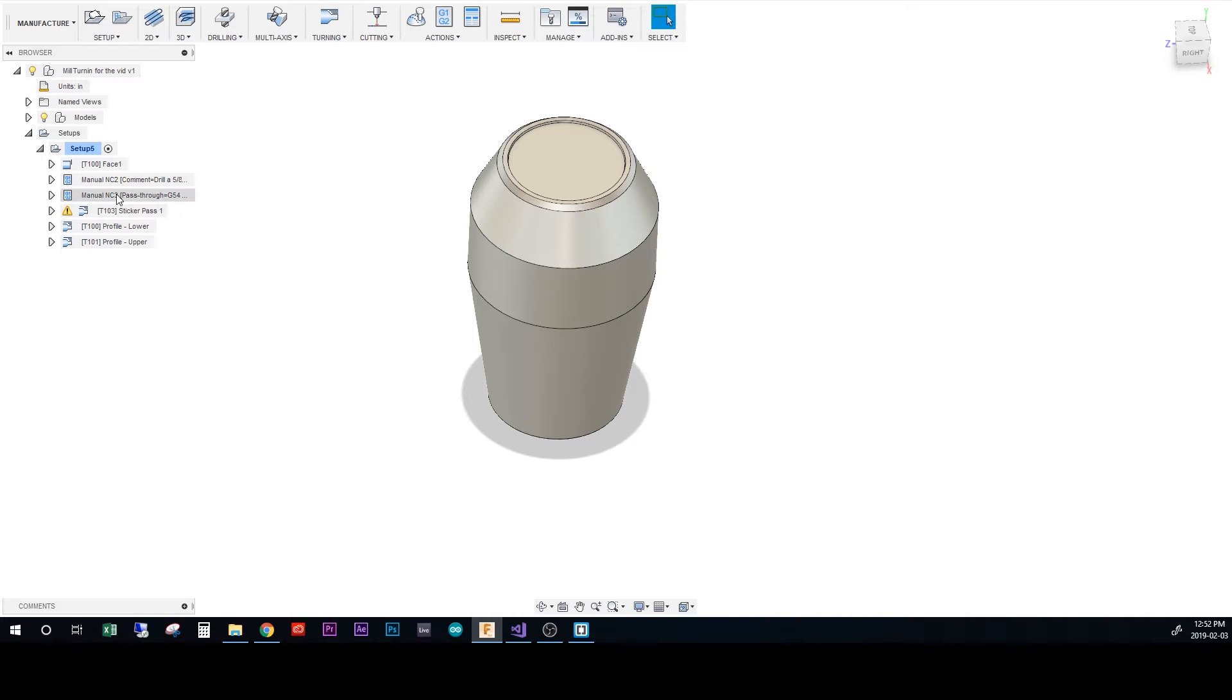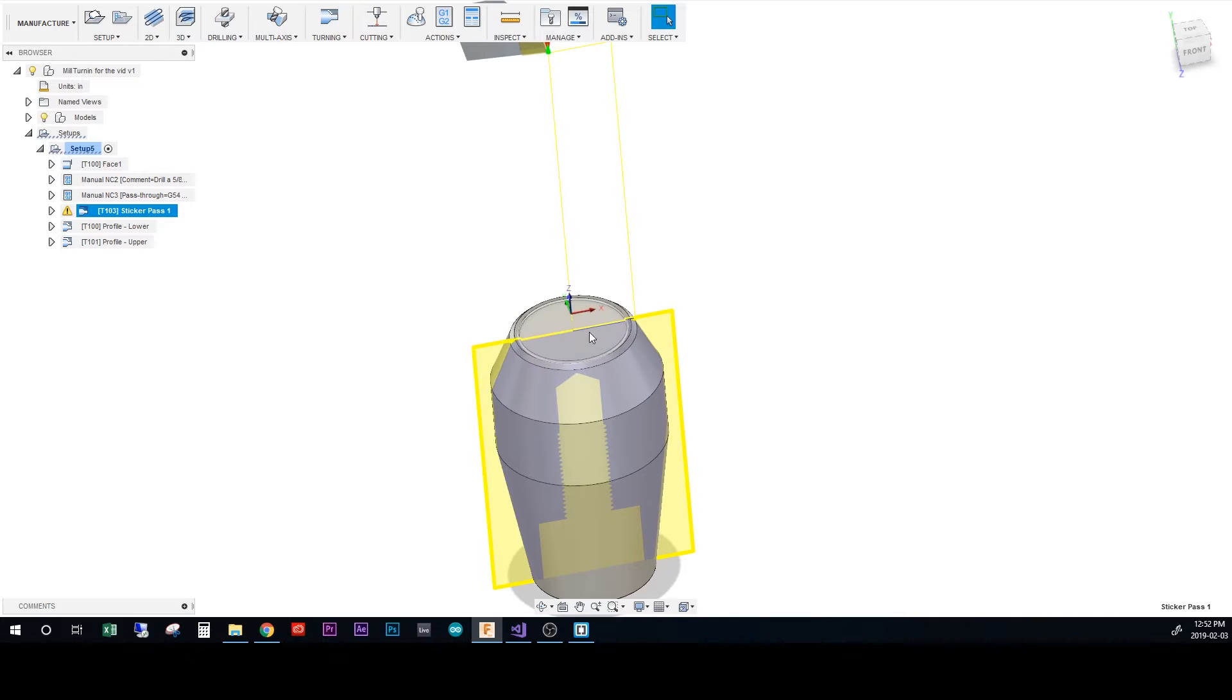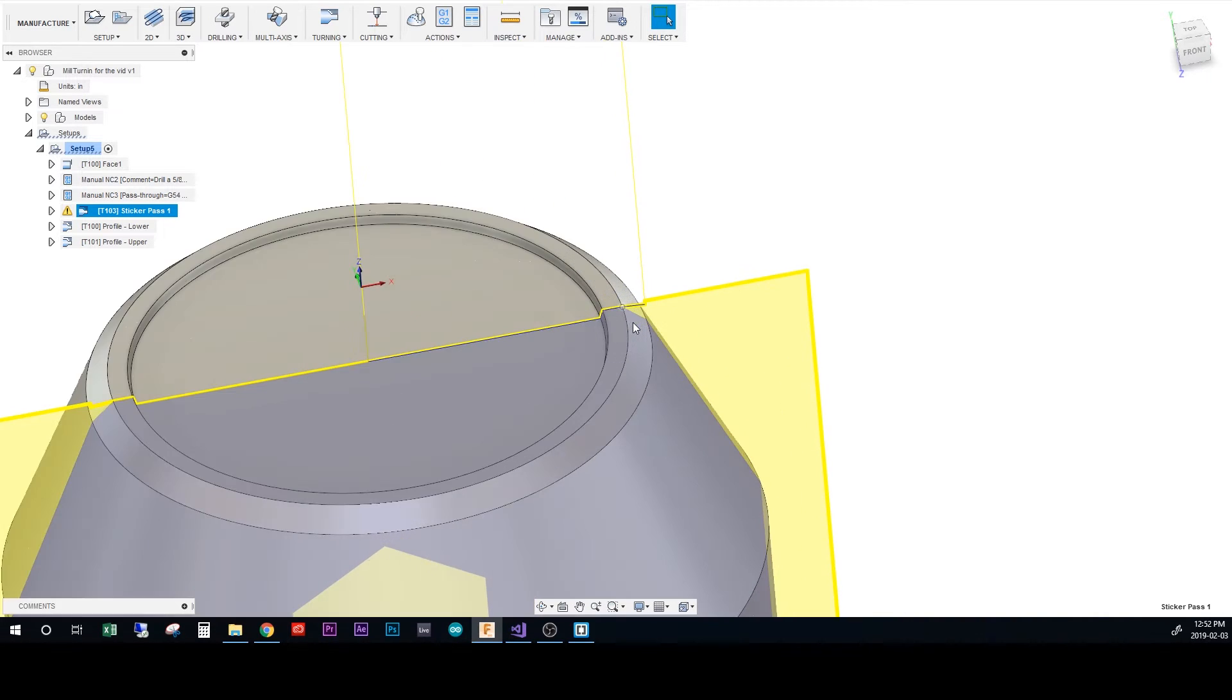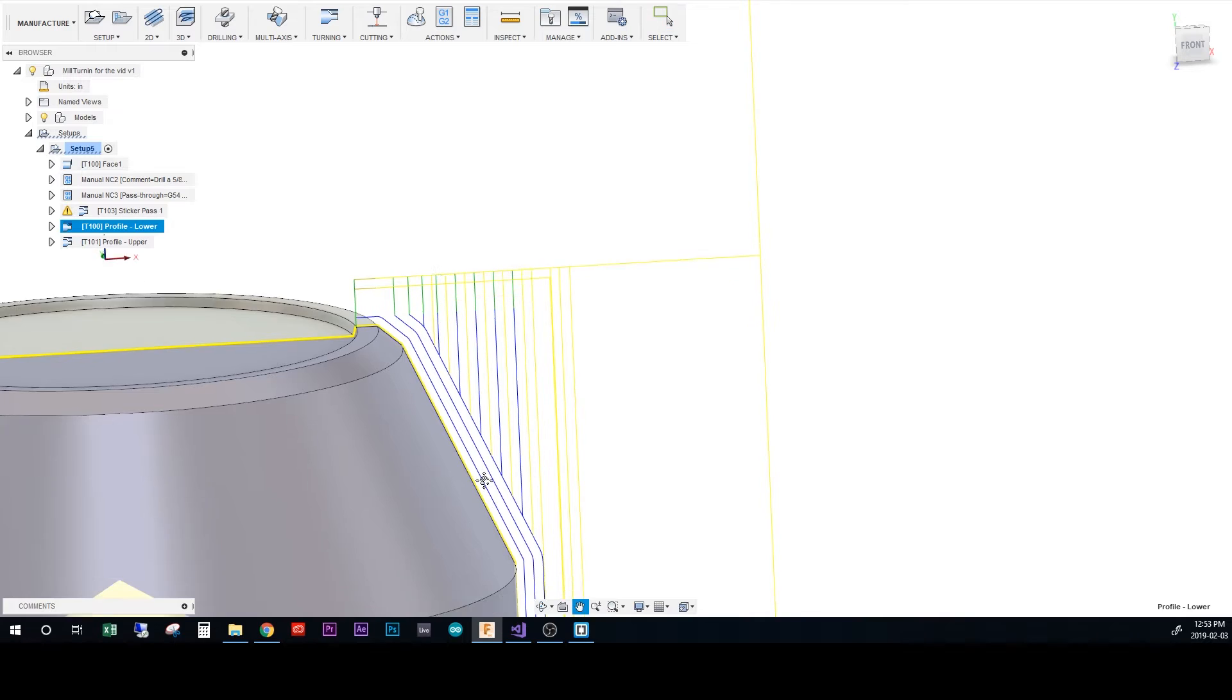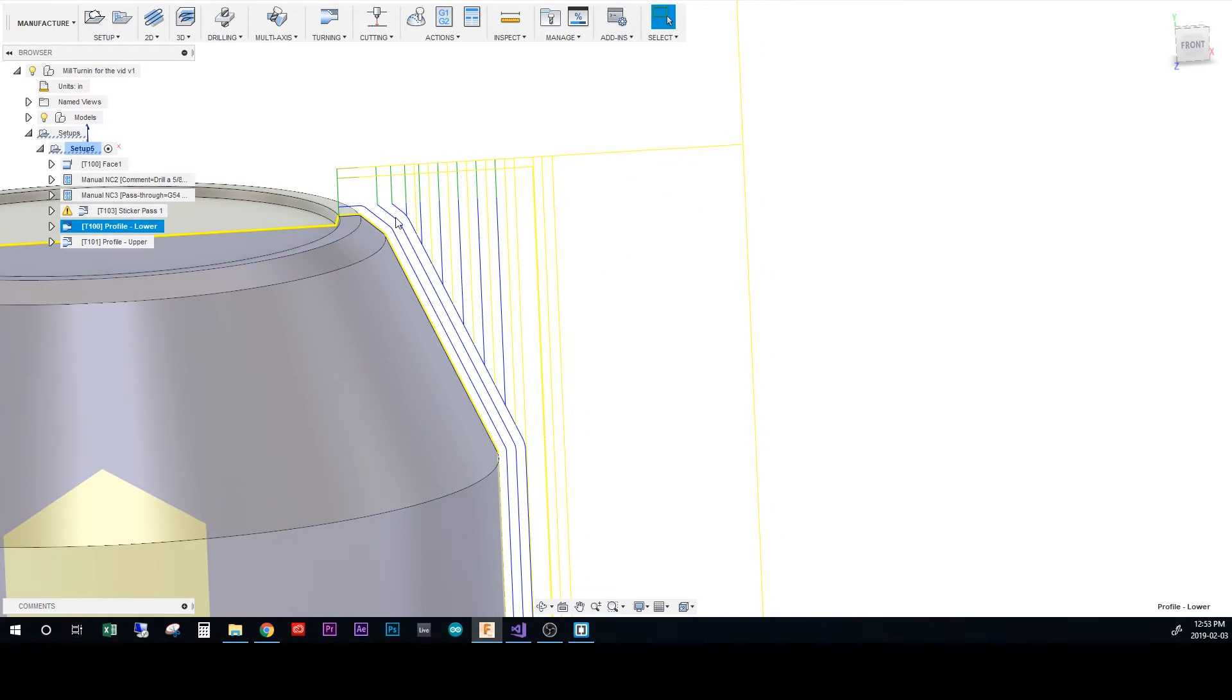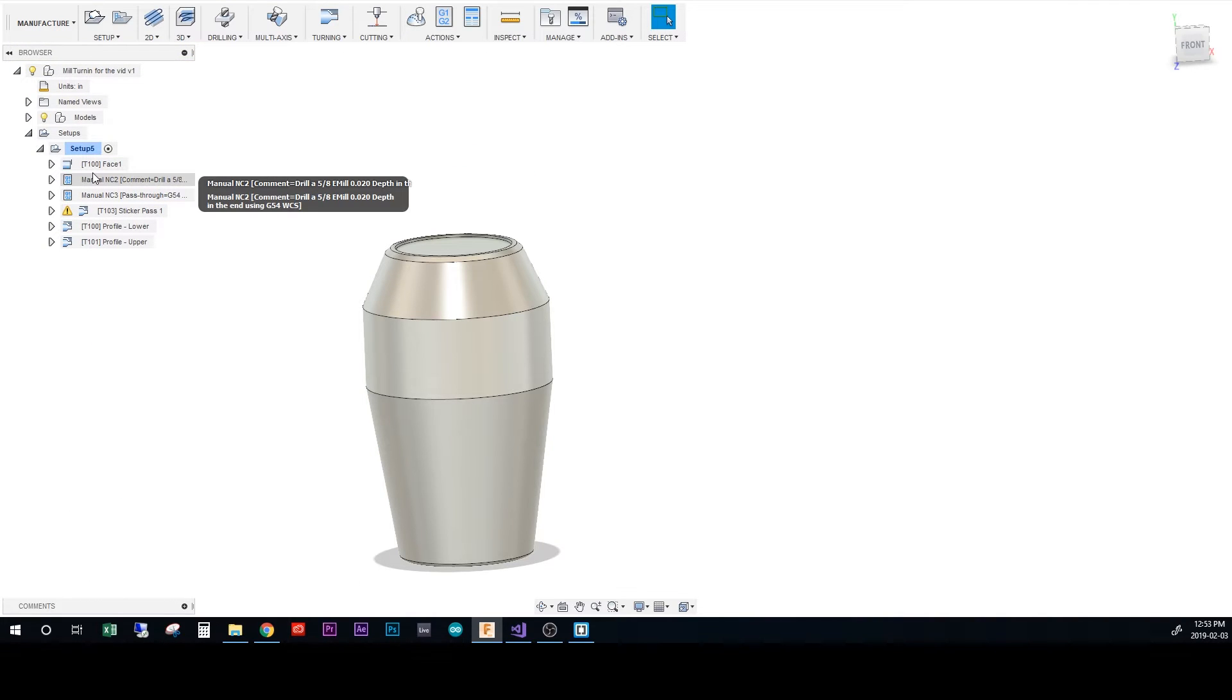I do the spot drill, if you will, on the end of the pocket with a five-eighths end mill to make space for the boring bar. Once that's done, the boring bar is going to come in and take care of the inside pocket and this little lip here. Then this tool comes down and rough cuts the profile of it. I found if you do multiple passes like this, at least two, it produces a much better finish.